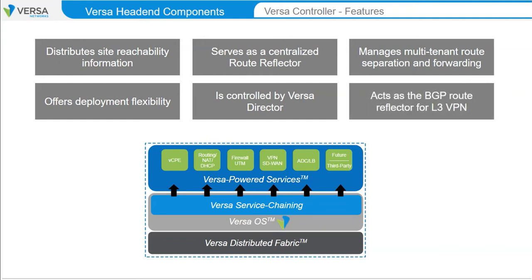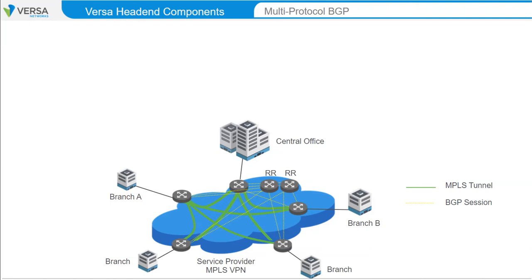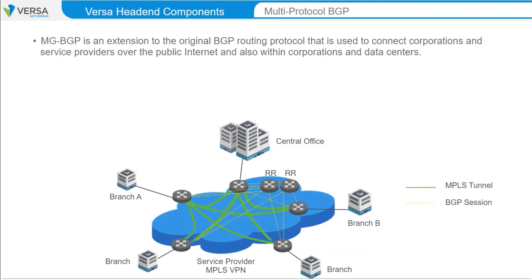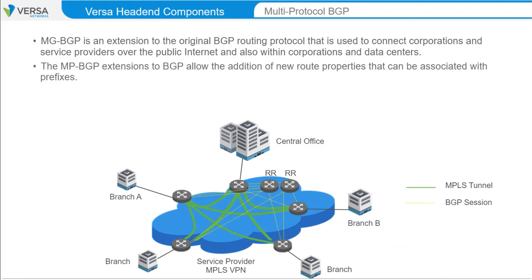Versa has chosen to use MPBGP and standard Layer 3 VPN for their control plane. Overlay networks commonly use MPBGP as a control plane. MPBGP is an extension to the original BGP routing protocol used throughout the world to interconnect corporations and service providers over the public Internet, and also within corporations and data centers to manage large amounts of routing information. The MPBGP extensions to BGP allow the addition of new route properties that can be associated with prefixes. BGP speakers negotiate which properties are supported when they build their sessions, ensuring compatibility and the ability to exchange the same types of routing information. The most critical information is the Network Layer Reachability Information, or NLRI, which refers to the format and properties of exchanged routes.